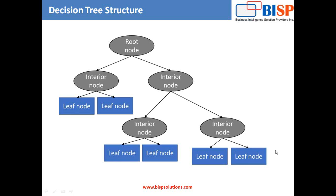Decision trees are very close to real life and we use them multiple times in real life. Let's consider a scenario where a person asks you to lend them a car for a day and you have to decide whether or not to lend them the car. There are several factors that help determine your decision. The first question we can ask ourselves is: is that person a close friend or just an acquaintance? If the person is just an acquaintance, we simply decline the request.